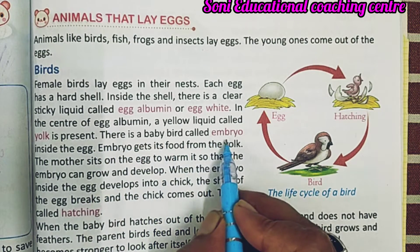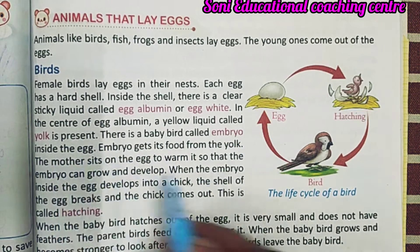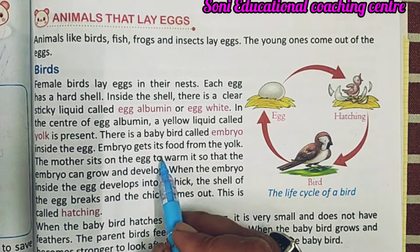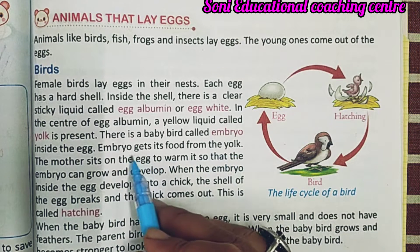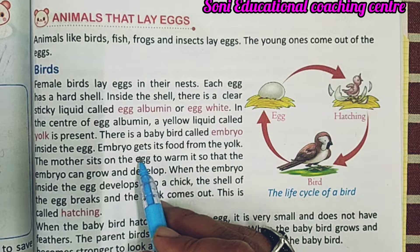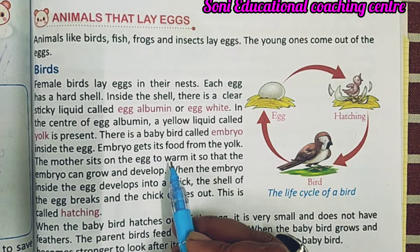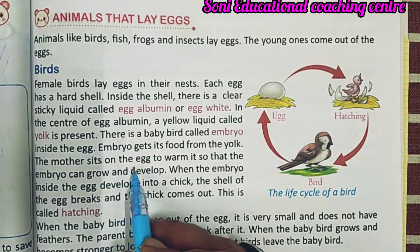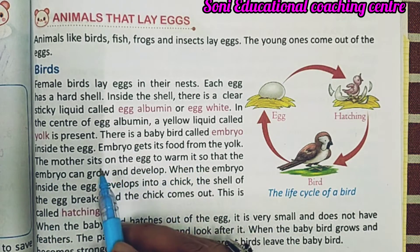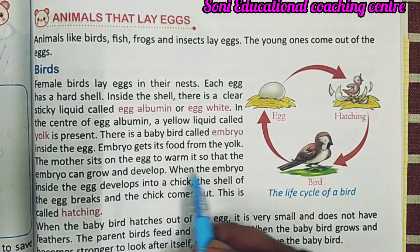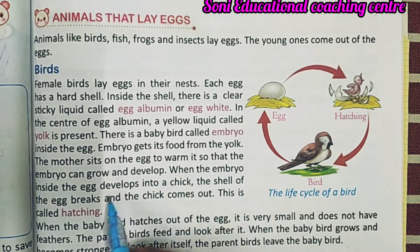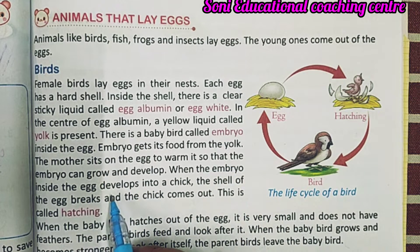The baby bird, called an embryo, develops inside the egg. The embryo gets its food from the yolk. The mother sits on the egg to warm it — जो माता होती है, वो अंडे के ऊपर बैठती है और इसे गरम करती है — so that the embryo can grow and develop — ताकि उस अंडे के अंदर embryo बढ़ सके और विकसित हो सके।